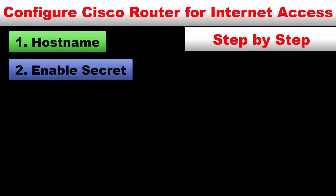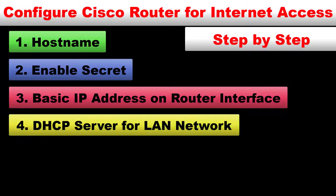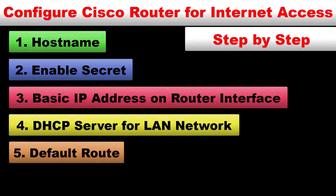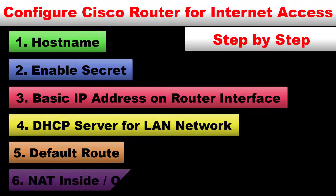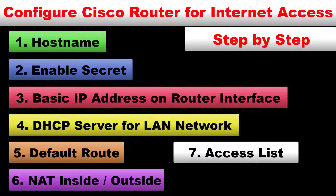In the next step, I will configure basic IP addresses on the Cisco router on both interfaces — one toward my ISP router and a second interface that connects to my LAN network. After that, I will create a DHCP server for my LAN network and configure the default route. In the next step, I have to configure NAT inside and NAT outside on the router interfaces and create an access list to permit the LAN network for internet.